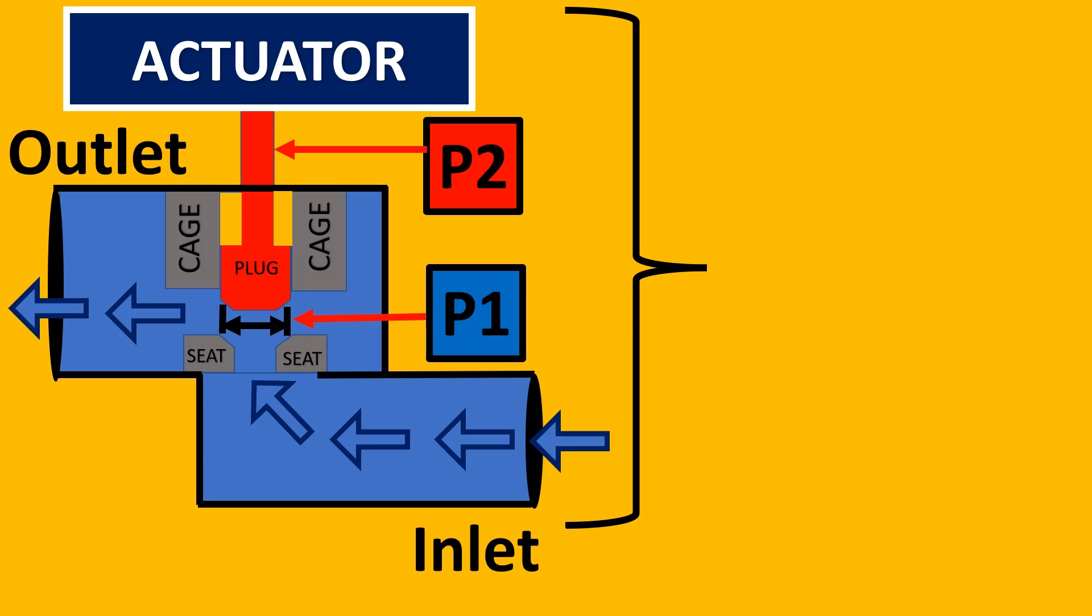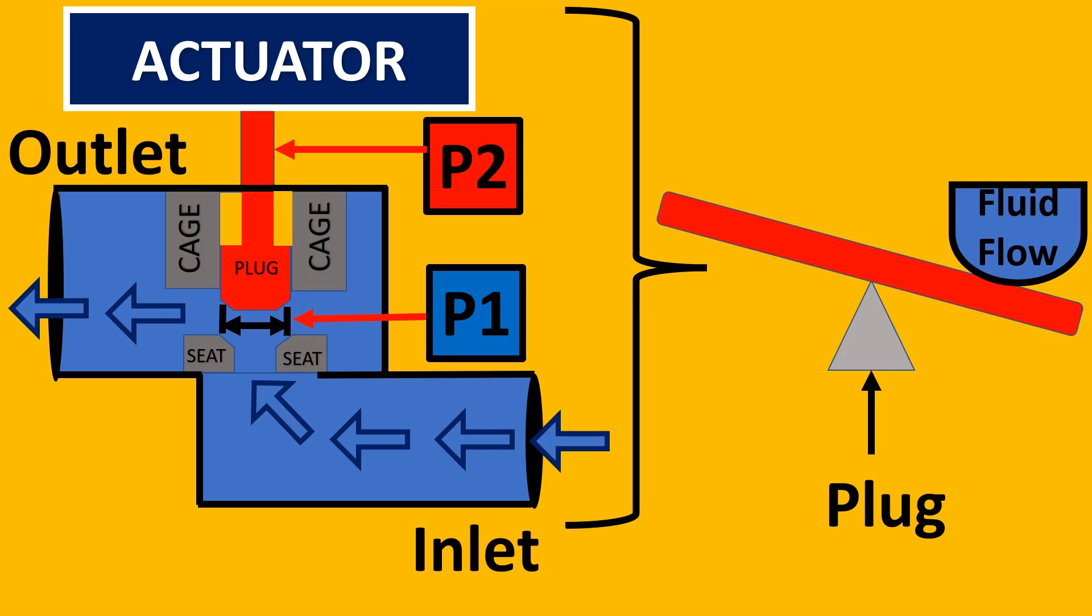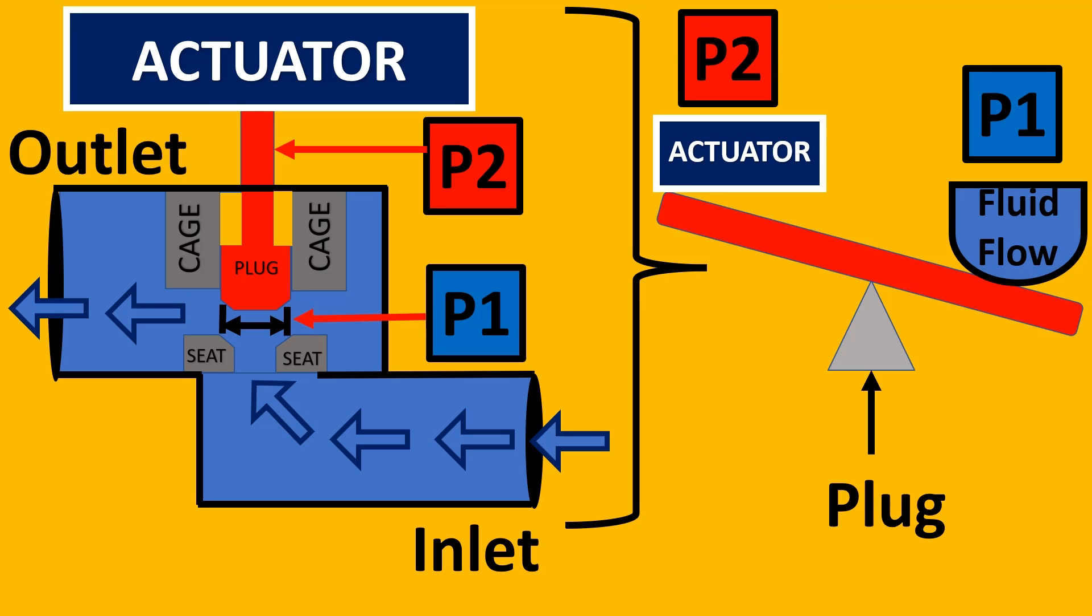Let us understand this with an example of a seesaw. Here, imagine you have your plug and the seesaw has from one side the pressure P1, or the force acting from the fluid. On the other side, what is there to balance it? The answer is nothing except the force of the actuator.